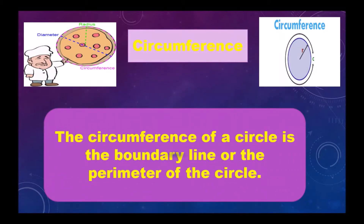Circumference: the boundary line or the perimeter of a circle. This is the circumference of a circle.